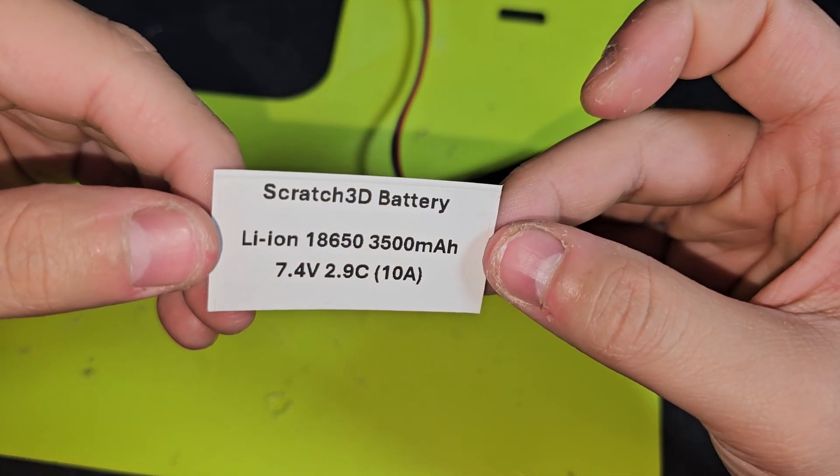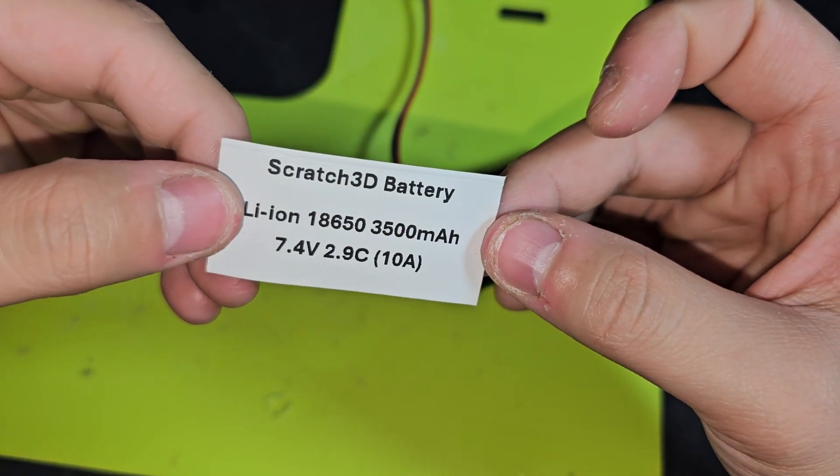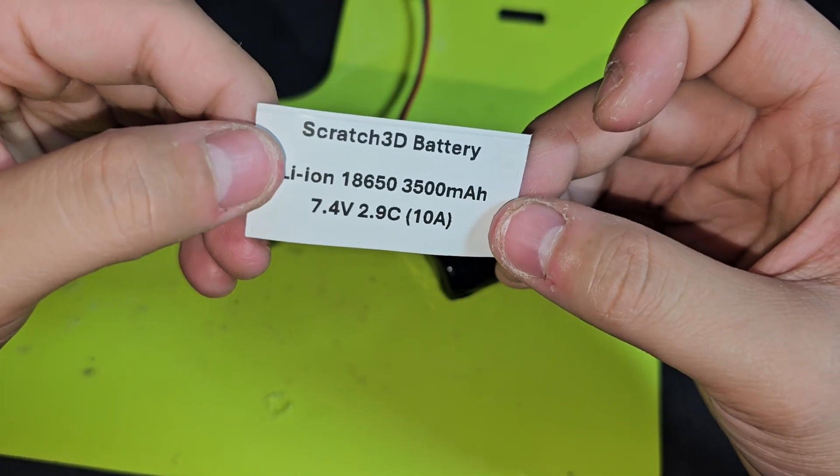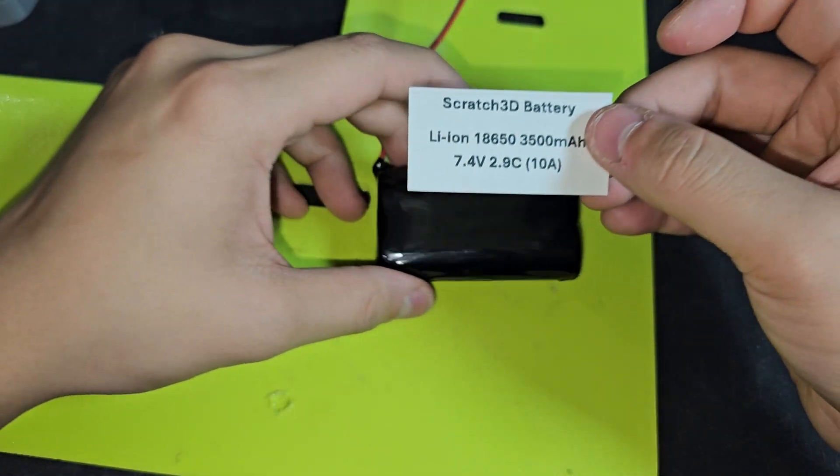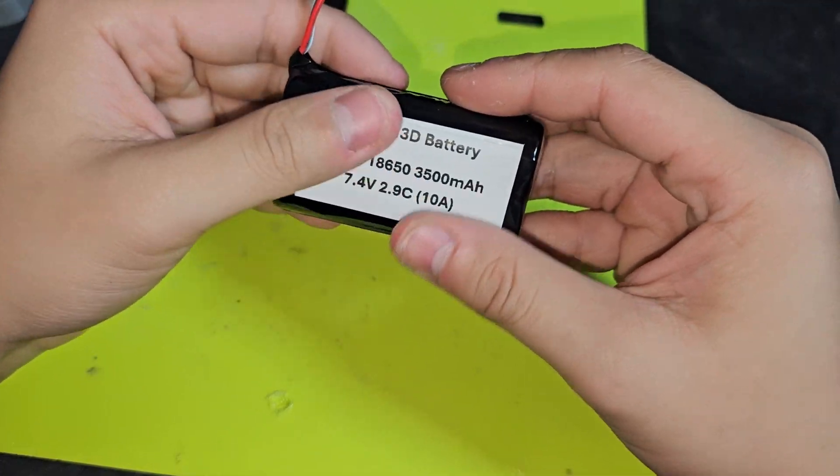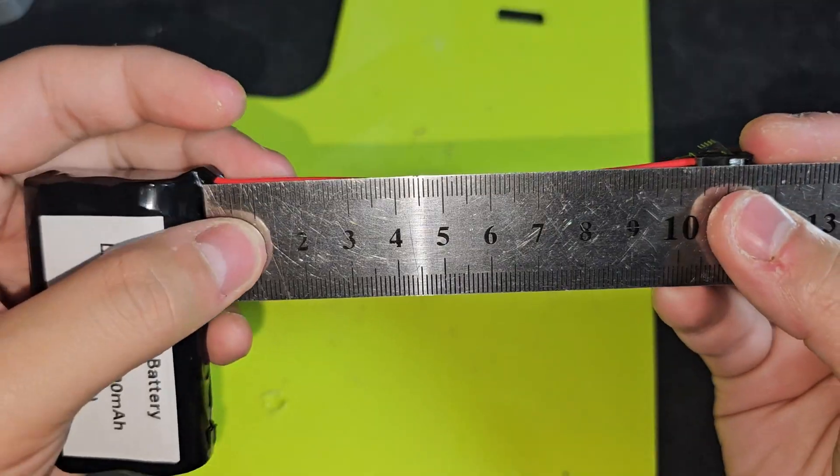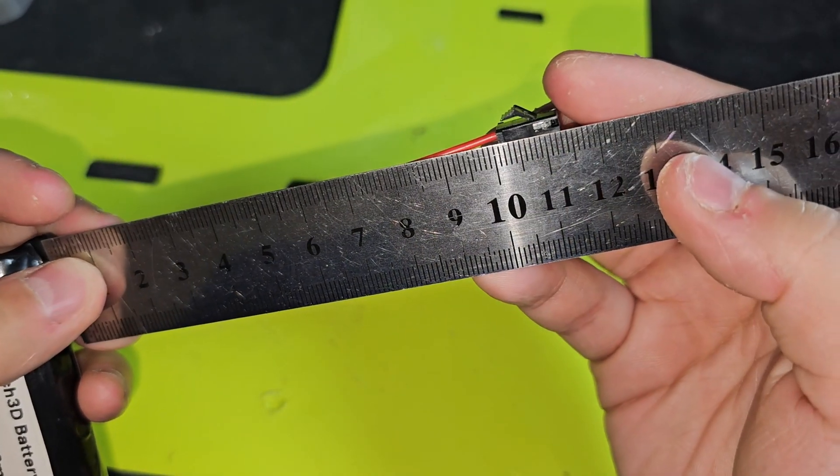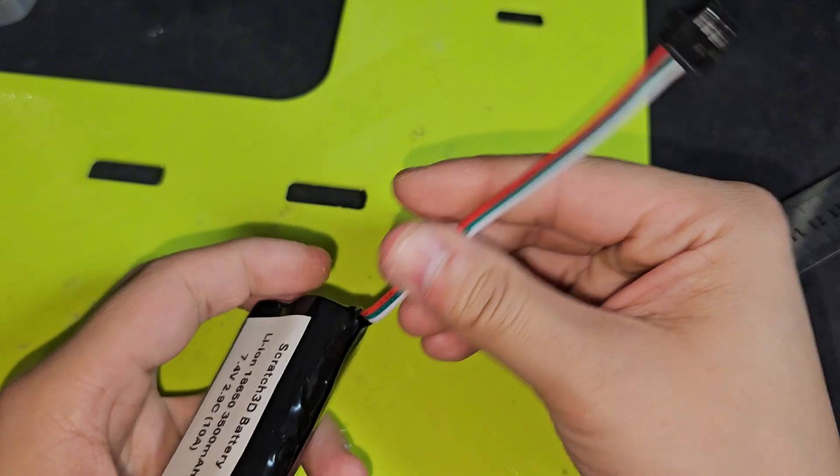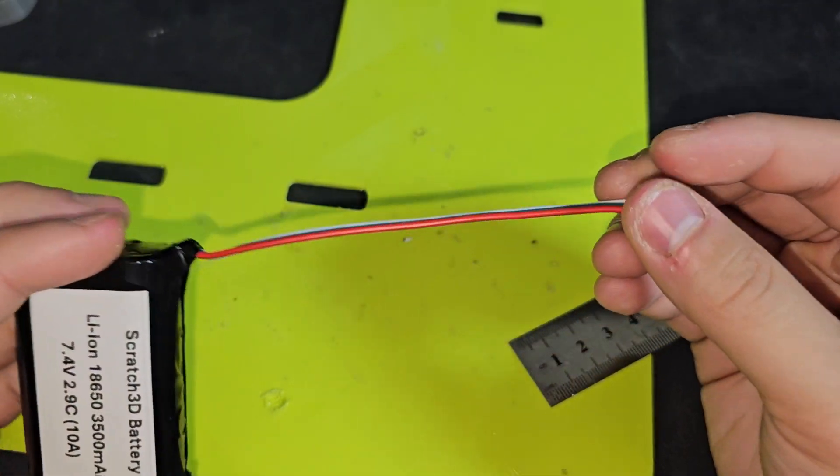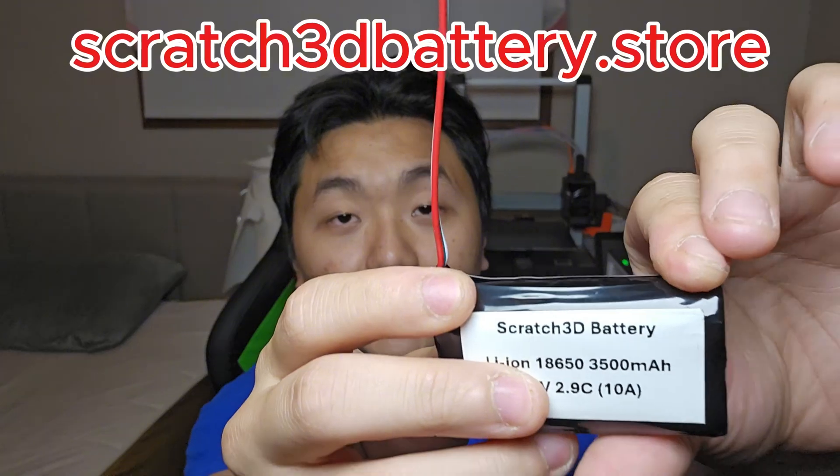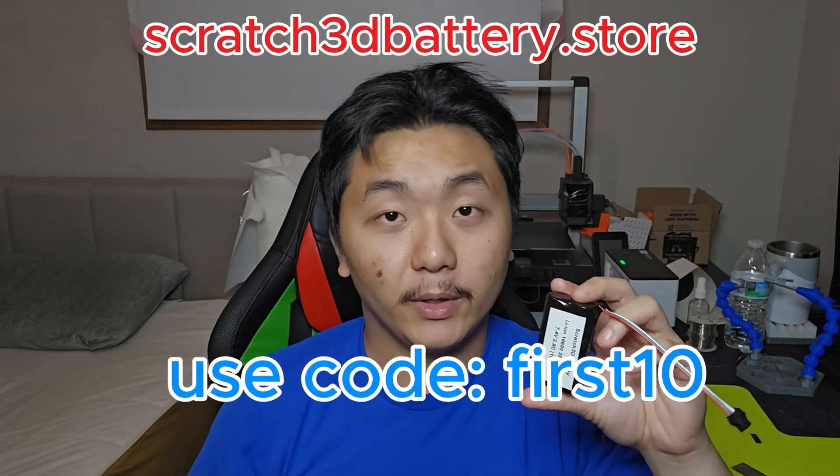Look at this. Also made a label for it. Scratch 3D battery. Lion or lithium ion. 18650. 3,500 mAh. 7.4V. 2.9C. And 10A. And battery finish. And this wire is about 100mm. If you count the tip here, it's about 115mm long. So you'll get a 100mm wire range like this. So I have finished building this battery pack. This 2S battery pack, and there is no sharp edge anywhere. It's a very compact battery.